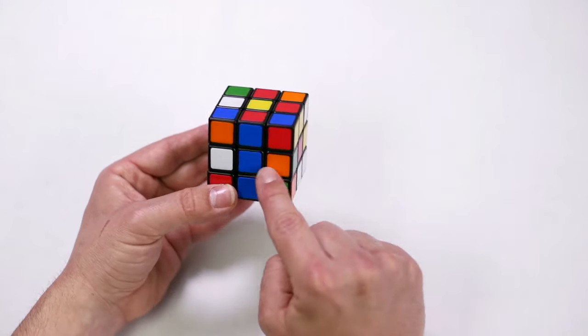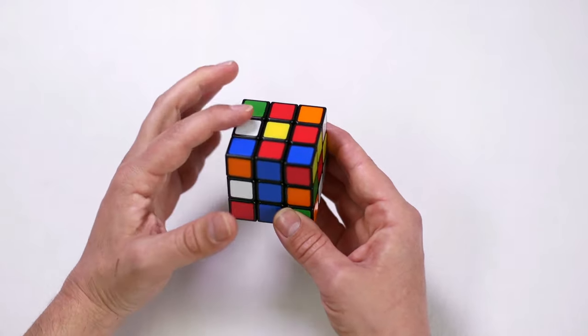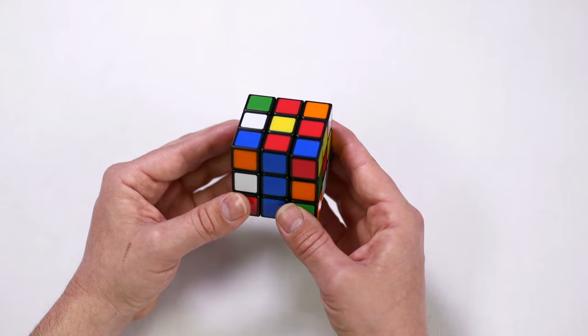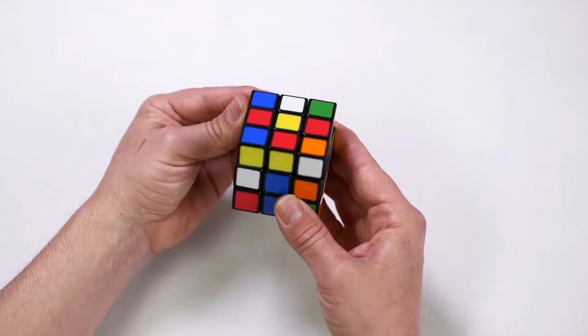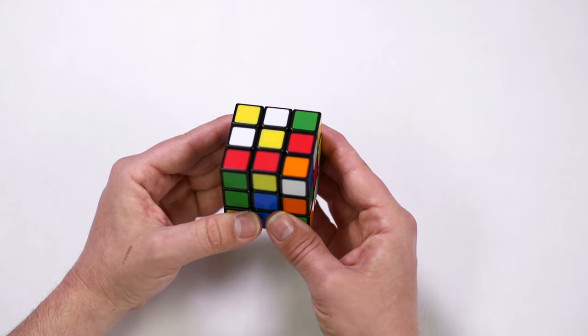Next, look on the middle layer to find your next white edge piece. If I move this up, it bumps this one out of position. All I need to do is turn the up face to create space here and I can put it next to the yellow center.